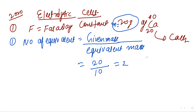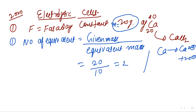Why does 20 come as equivalent mass? Because calcium loses 2 electrons to form Ca²⁺. In the second step, Ca²⁺ gains 2 electrons to form calcium. So the valency factor is 2. Equivalent mass equals atomic mass divided by valency factor: 40 divided by 2 equals 20.